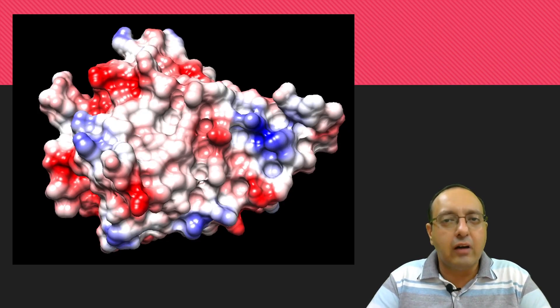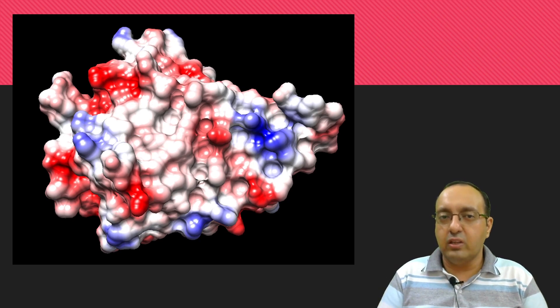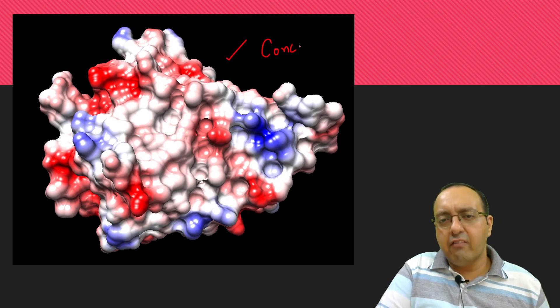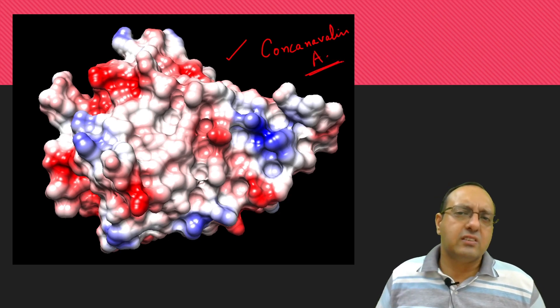The idea of ion exchange chromatography comes from the net charge of a protein. Any protein, for example, in this case, we have a protein called concanavalin A. This is just a representative protein. This is true for any other protein also.